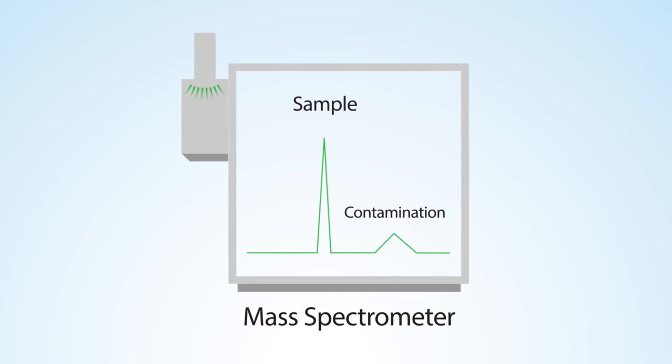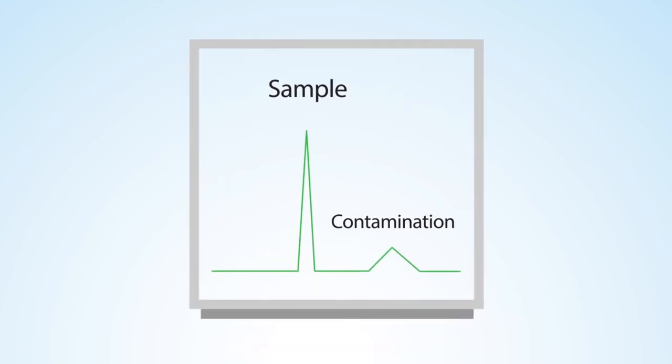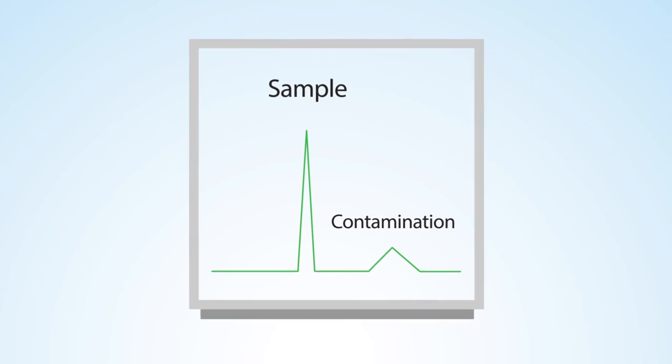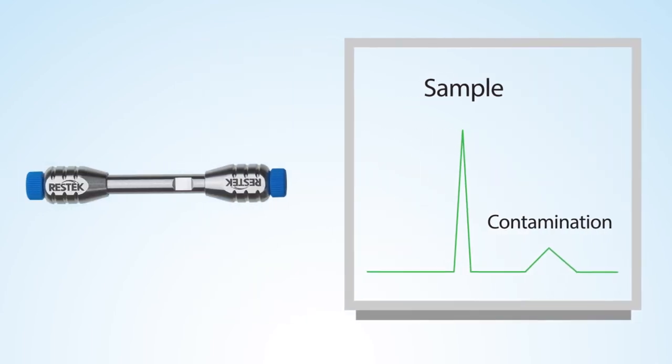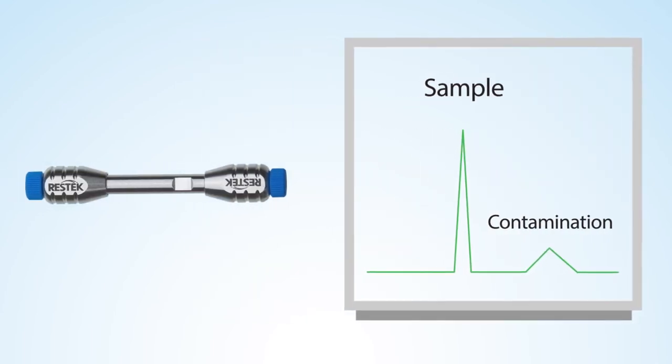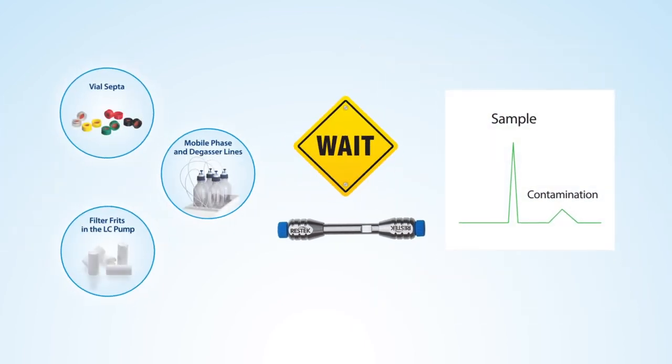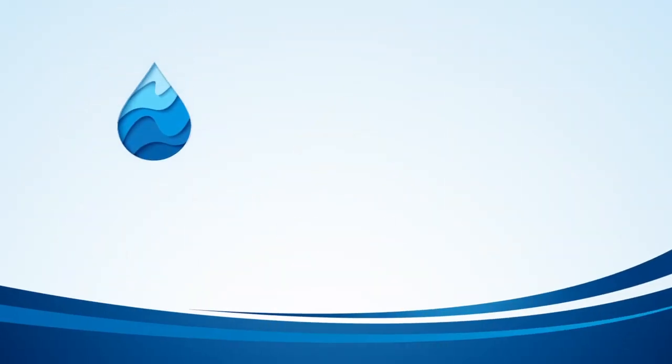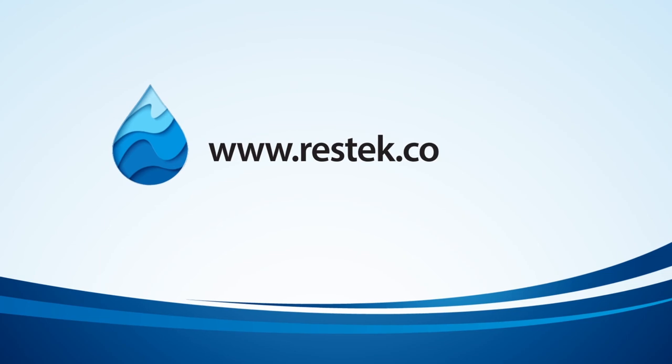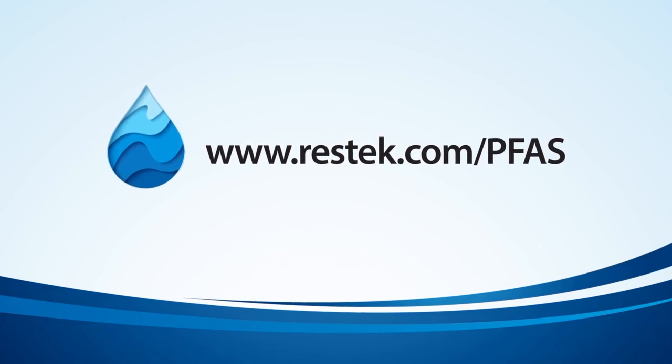Because of the prevalence of PFAS, we have to take some measures to manage PFAS contamination to ensure the integrity of our data. A PFAS delay column, correctly installed between the mobile phase mixer and the sample injector, delays the system-related interference for accurate measurement of PFAS in your sample. To learn more about PFAS analytical solutions, visit ResTech.com slash PFAS.